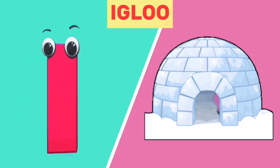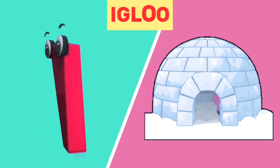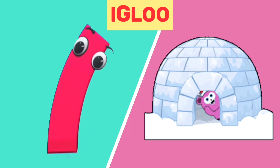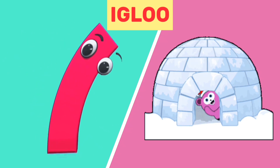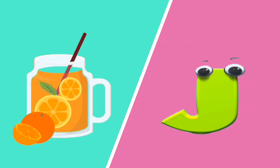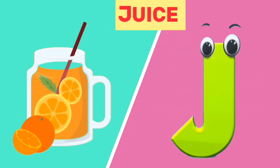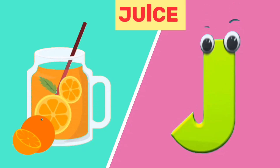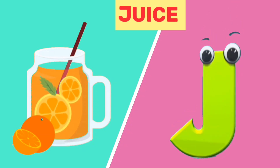I is for igloo. I, igloo. J is for juice. J, juice.